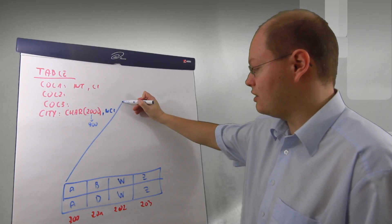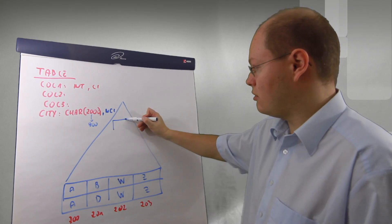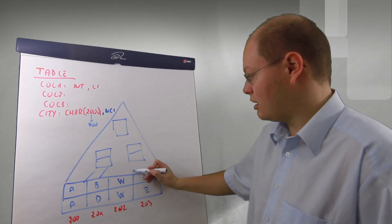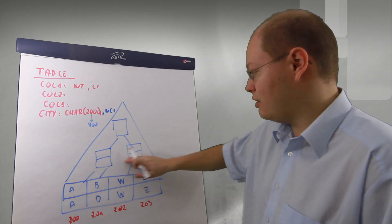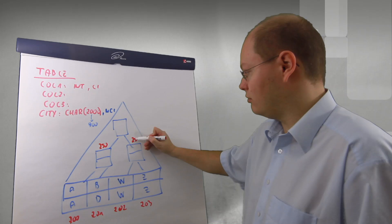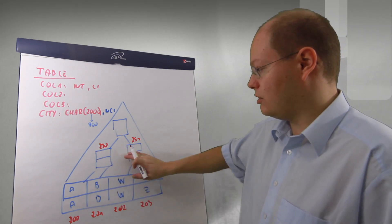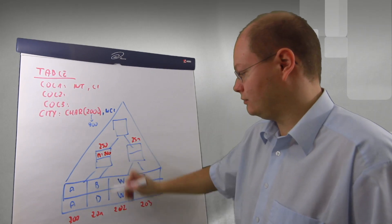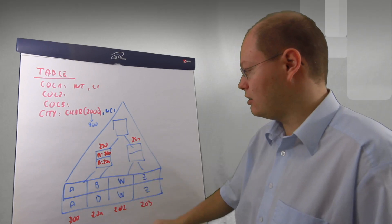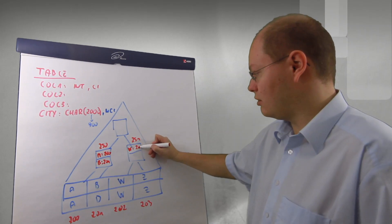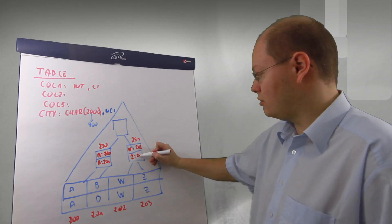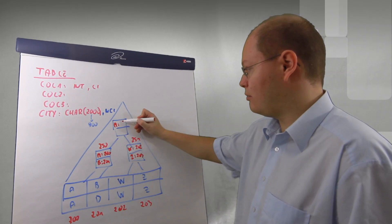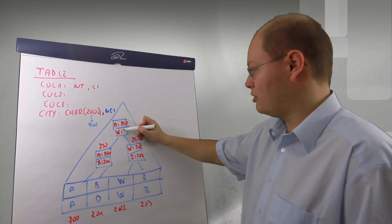Afterwards SQL Server creates the navigation structure. Let's assume we have our index root page and two intermediate level pages — again a very nice tree structure. We have page IDs 250 and 251. SQL Server stores the lowest value of the level below: A on page 200, P on page 201, W on page 202, Z on page 203. Finally we have our index root page with A on page ID 250 and W on page ID 251.